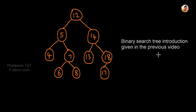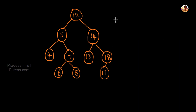There are 3 scenarios when you delete a node in a Binary Search Tree. The BST must maintain its property: on the left, there are smaller numbers, and on the right, there are bigger numbers. Each node must satisfy this property.